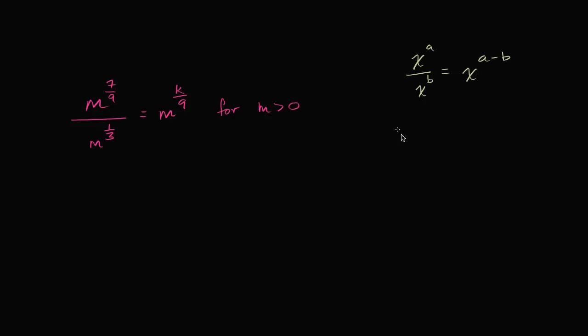And it actually comes straight out of the notion that x to the a over x to the b is the same thing as x to the a times one over x to the b, which is the same thing as x to the a times x to the negative b, which is going to be the same thing as, if I have a base to one exponent times the same base to another exponent, that's the same thing as that base to the sum of the exponents, a plus negative b, which is just going to be a minus b.